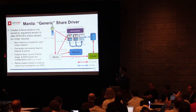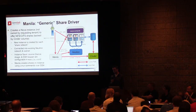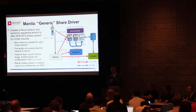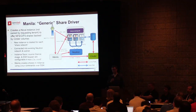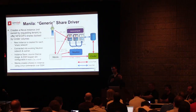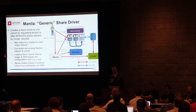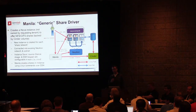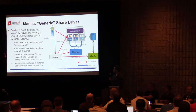The way the generic driver works is that when Manila gets a request to create storage, it will create a Nova VM that's not owned by the tenant. It will create two network interfaces — one connected to the tenant network and one connected to the backend network. Then it will create a Cinder volume to actually store the data, format it ext4, and use NFSD or Samba to actually provide the share service onto the tenant network. These VMs are reusable, so if you ask for multiple shares, Manila will only create one VM and multiple shares can be served from a single VM.